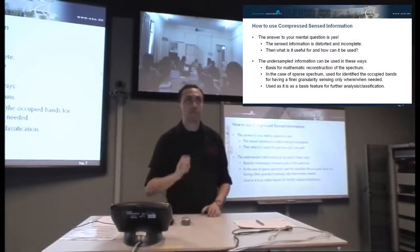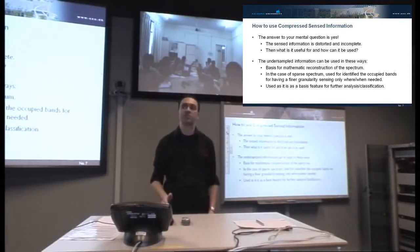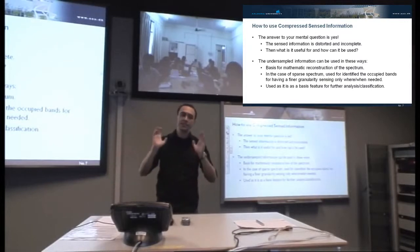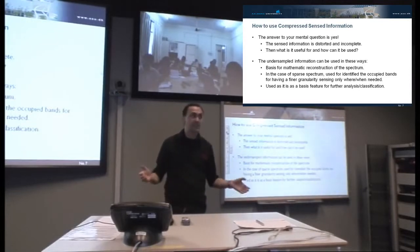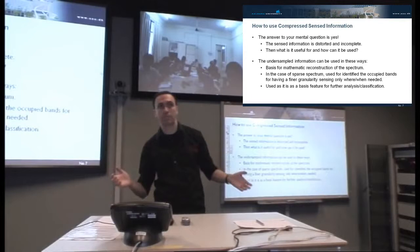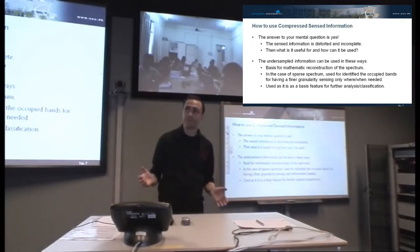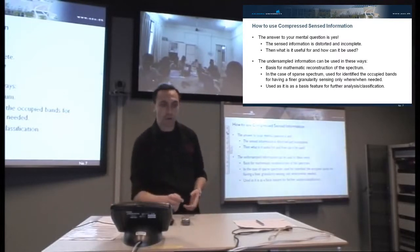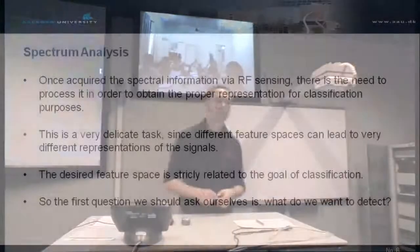The third way of using compressed sensing is to take this incomplete information as it is and use it directly for analysis and classification. That's another valid choice — it's up to you when you design the system to decide what you need. All of these choices are perfectly reasonable.